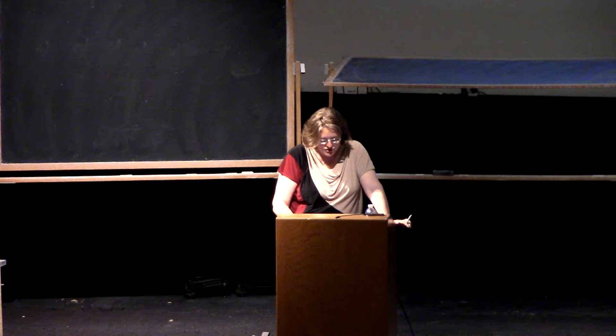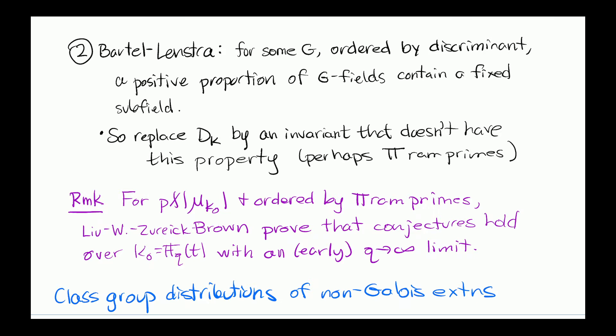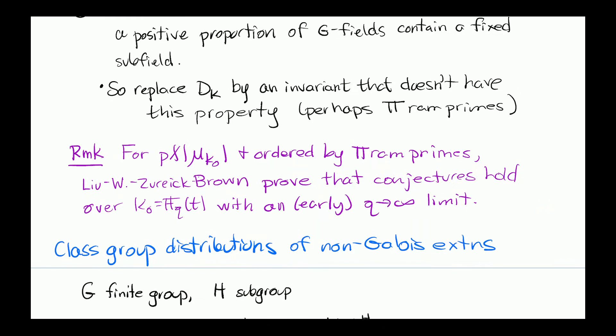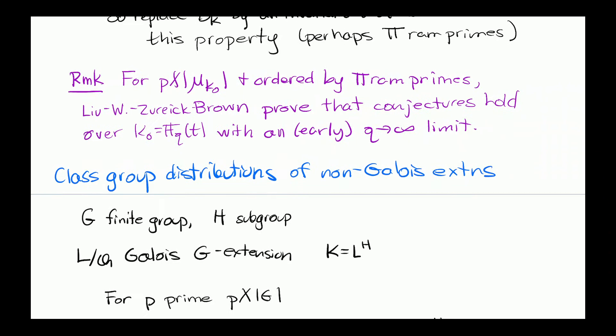Now, what about non-Galois extensions? Especially because one might want to start working with low-degree extensions — like non-Galois cubics, an obviously nice and accessible case. We're going to take G to be a finite group and H a subgroup. We'll start with a Galois extension L over Q, which is a Galois G extension, and then take the H fixed field K. This is how we think about non-Galois extensions: they all sit inside some Galois extension, for example their Galois closure, and we can think of them as the fixed field of some Galois G extension by H.